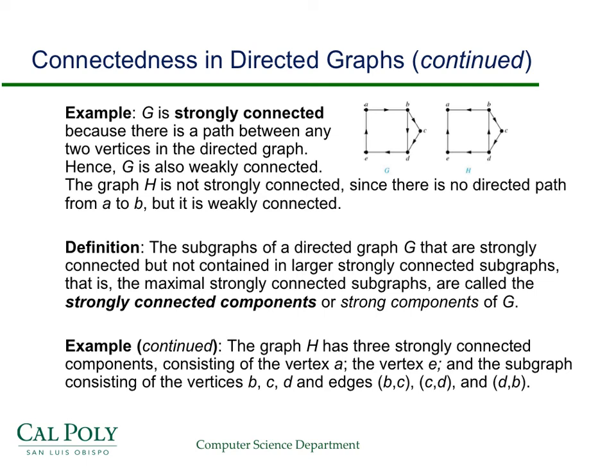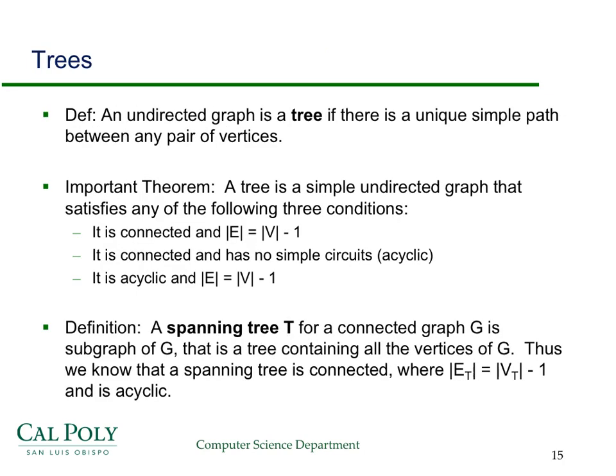So in fact, H has three strongly connected components. These three vertices and then these two vertices off by themselves. Notice that now if I take the union of those three strongly connected components, I don't get the entire graph. I don't get these two edges that are going that direction. So now we have to use our idea of a subgraph in a pretty meaningful way. Namely, that the subgraphs of the directed graph that are strongly connected but not contained in any larger strongly connected subgraphs, that is, they're as big as they can be, are called strongly connected components or strong components. Again, the graph H has three strongly connected components, two of which are kind of trivial, just the vertex A and then the vertex E. And then finally, the subgraph that consists of the vertices B, C, and D and the corresponding edges between them.